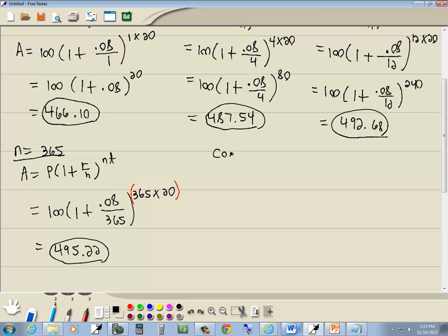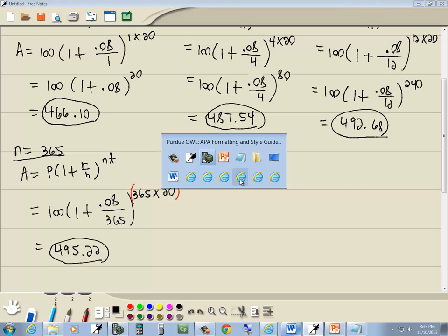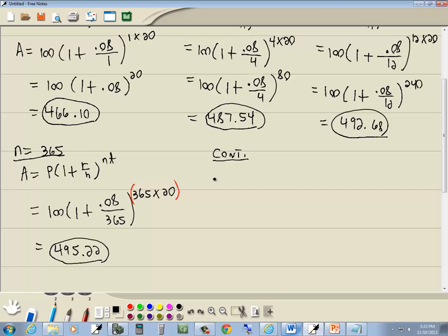And the last one, it tells us it's compounded continuously, which means we want to use PERT formula. So, we'll switch over, and we'll use A is equal to P, E to the RT power. Well, P was 100, E to the R, which is 0.08, times T, and T was 20.